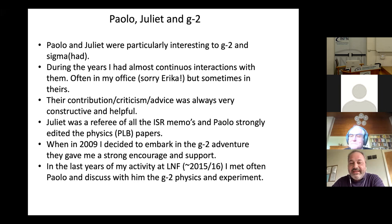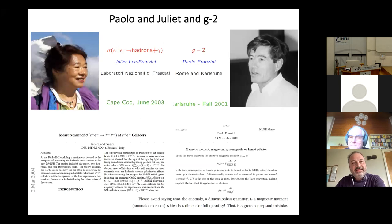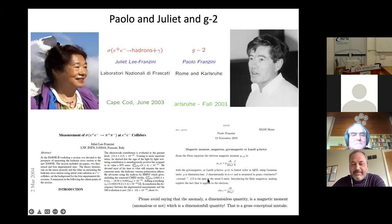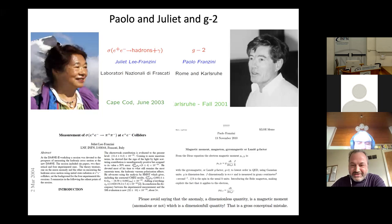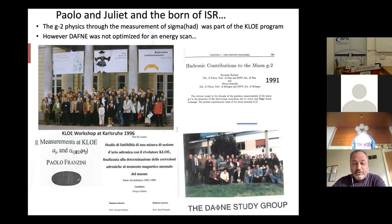Their contributions, criticism, and advice were always very constructive and helpful. Juliet was the referee of all the CHLOE SR memos — it was not always easy, but always very constructive. Paolo was strongly involved in editing the hadronic cross-section physics paper as well as most other CHLOE papers. A personal remark: when in 2009 I decided to embark on the g-2 adventure, they gave me strong anchoring support, which was not always the case from others. They really supported me and said this is something you should do.